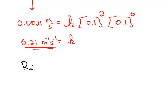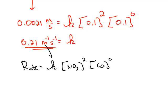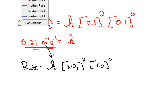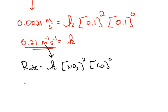So the whole rate law is now known. We know the value of k, it's second order with respect to nitrogen dioxide, and zero order with respect to carbon monoxide. Since anything raised to the zero power is just one, we can simplify the rate law as just k times the concentration of nitrogen dioxide squared.